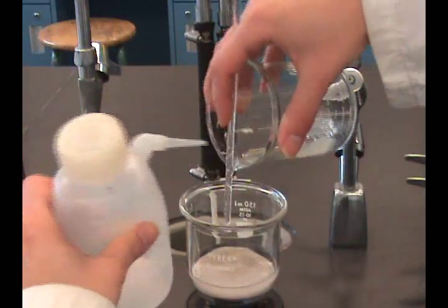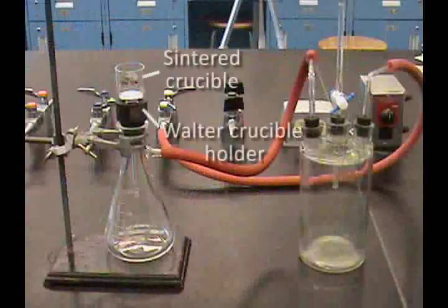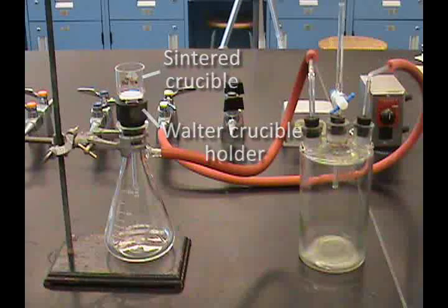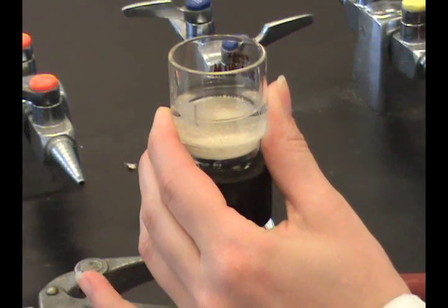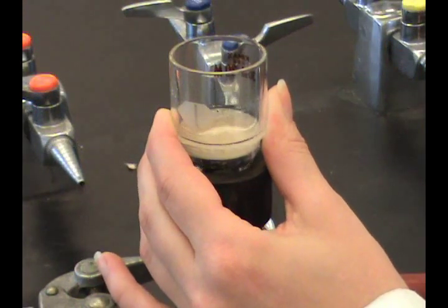Wash the solid. When using a sintered crucible, a Walter crucible holder is required. The liquid should flow quickly through the frit. If not, cleaning in a one-to-one nitric acid solution is suggested.